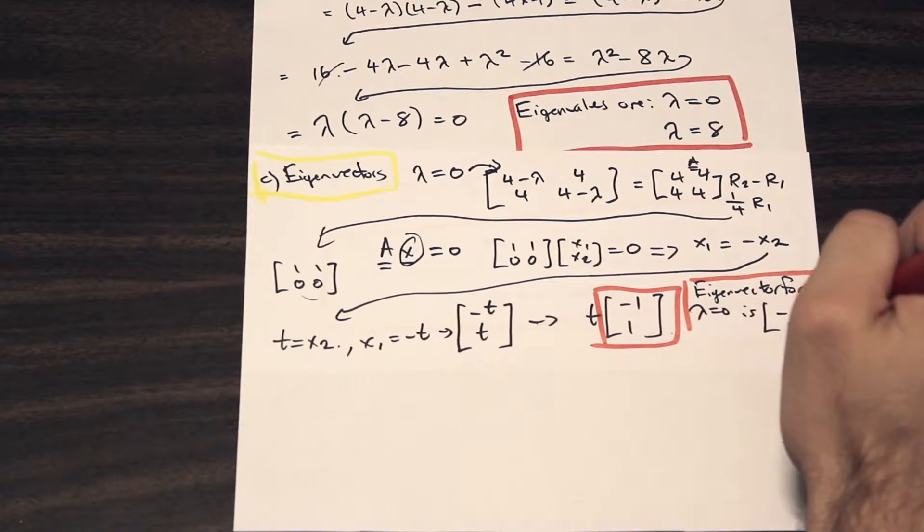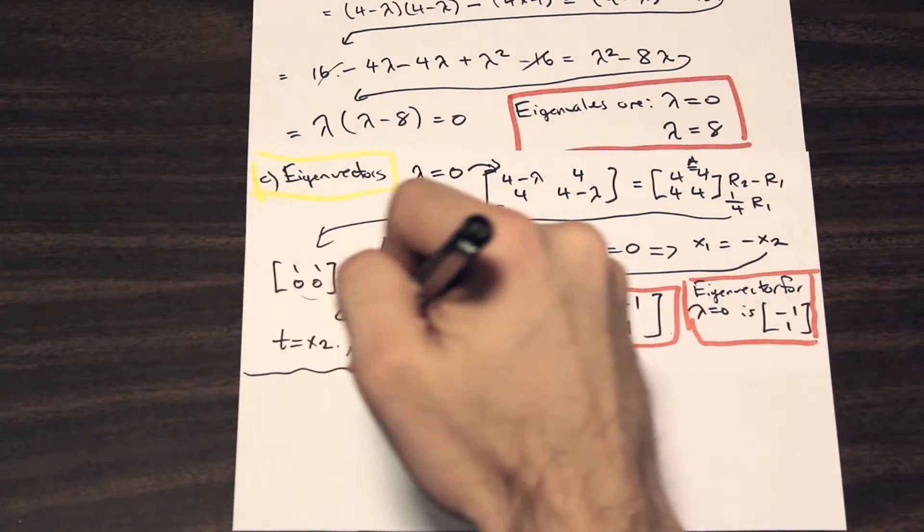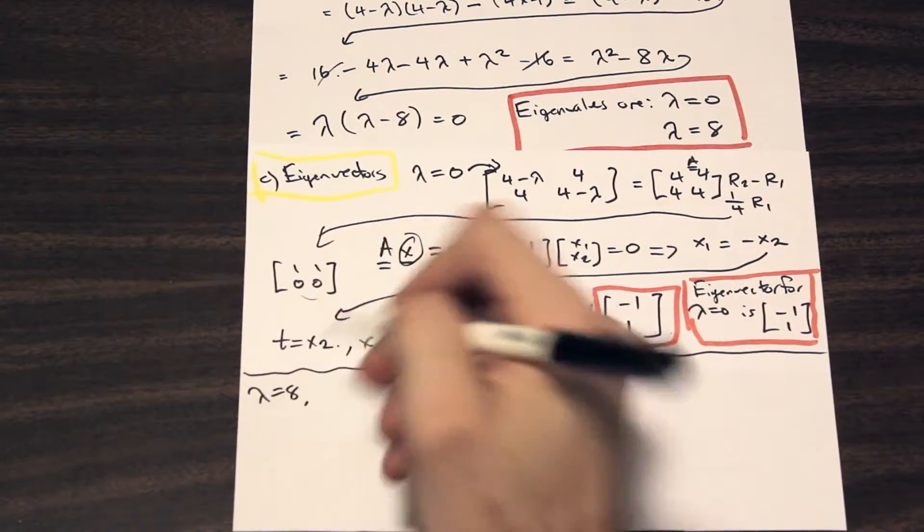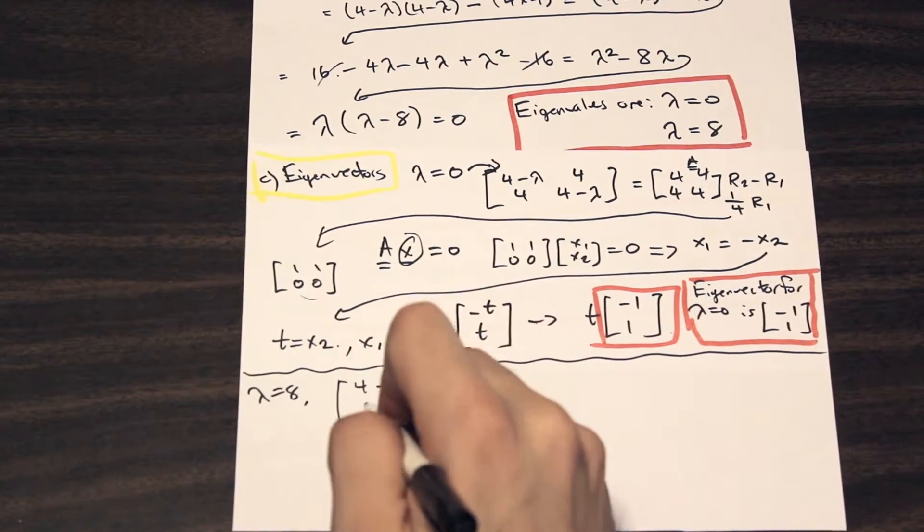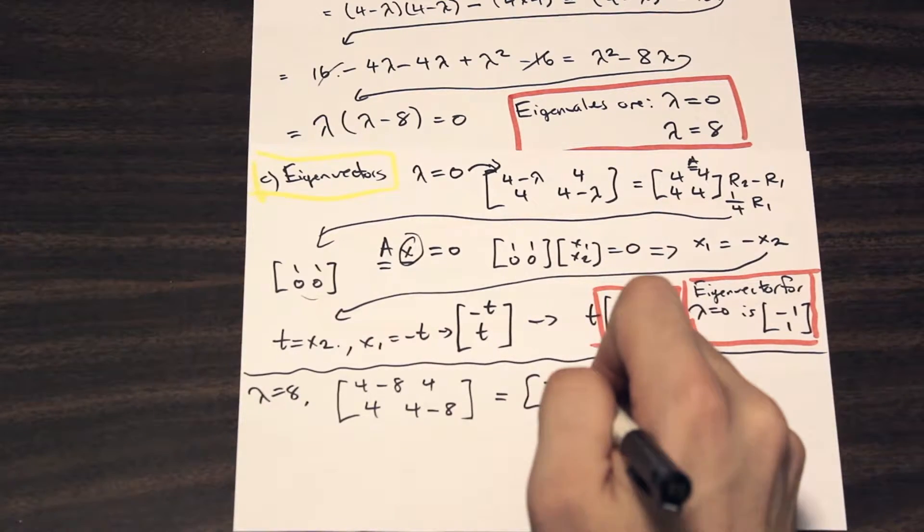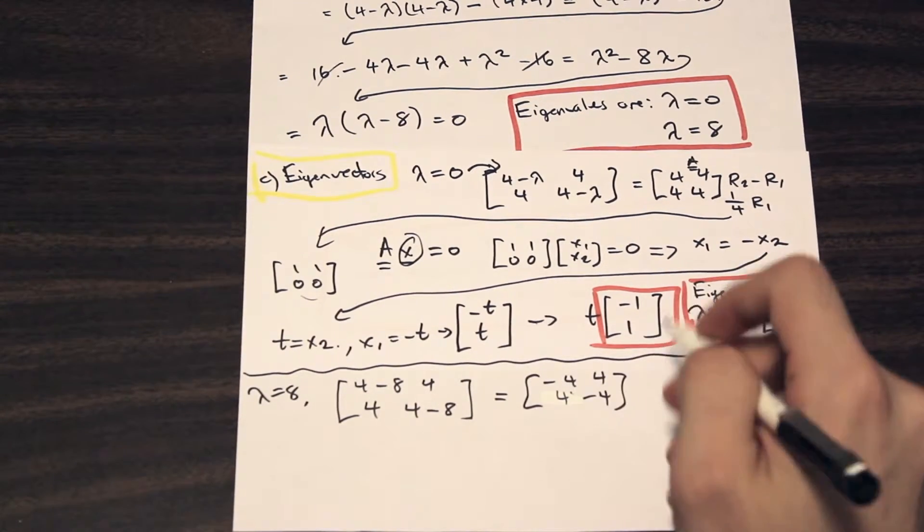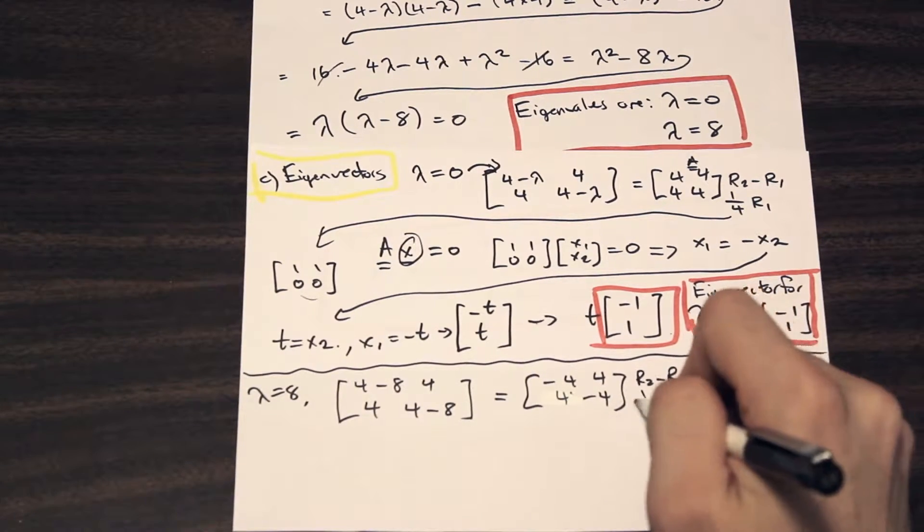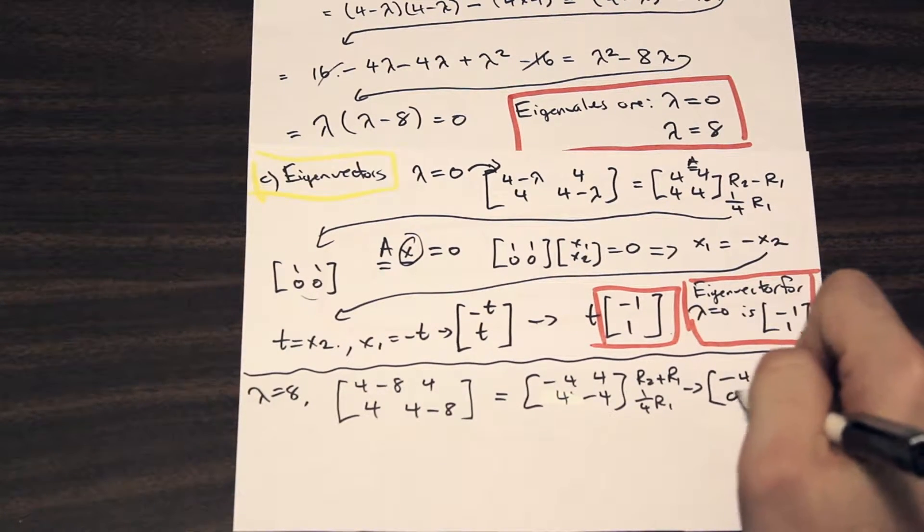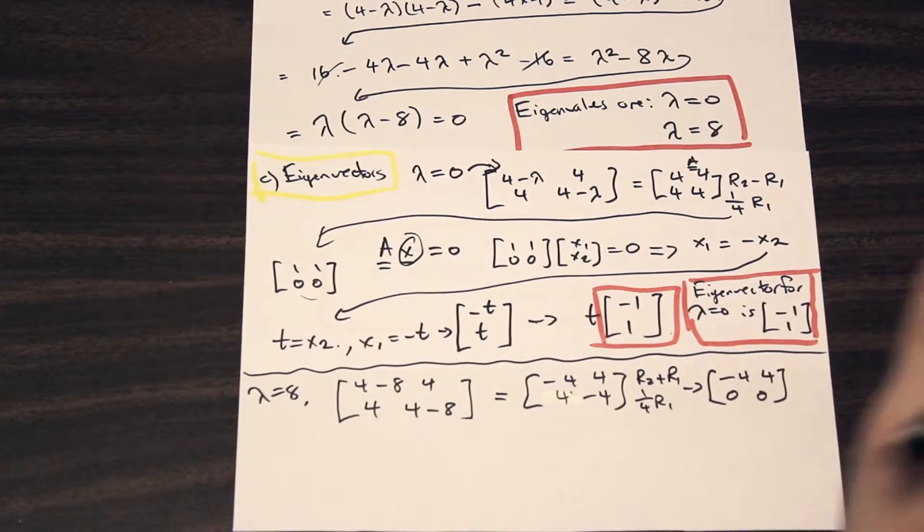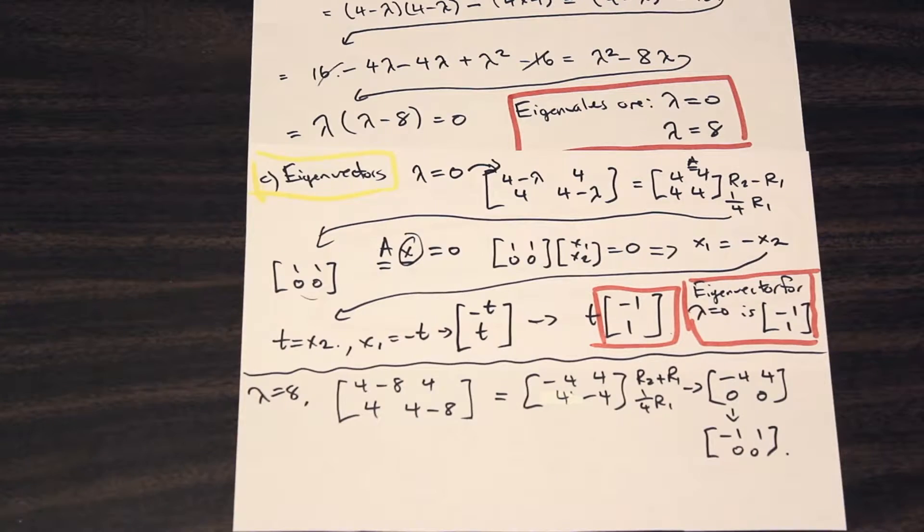Let's do our eigenvector for lambda equals 8. Okay, so we have lambda equals 8 now. So let's go ahead and plug that into our original matrix. So 4 minus lambda, we're just going to plug in 8 for lambda. And we will be left with a new matrix of negative 4. So once again, we can row reduce. And we can say R2 minus R1 and 1 over 4 R1. And that will give us a new matrix of negative 4, 4, and then we have 0, 0. And then dividing the top row by 4, we're going to have negative 1, 1, 0, 0. So that's our new matrix for lambda equals 8.